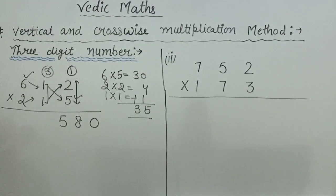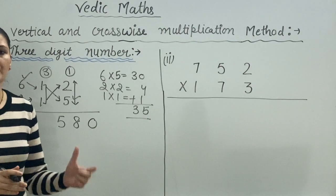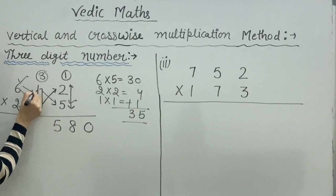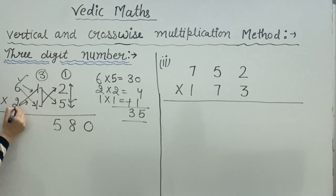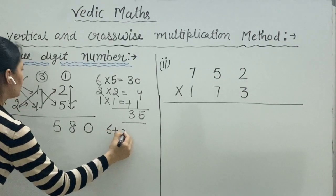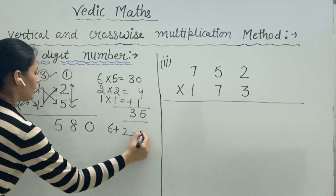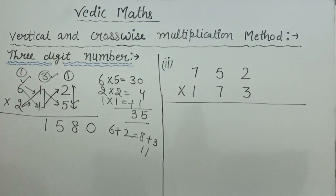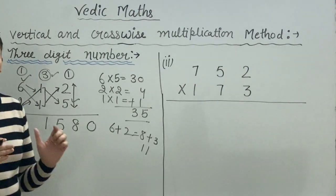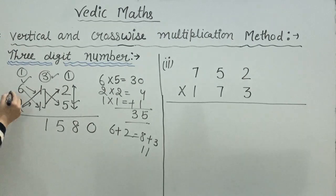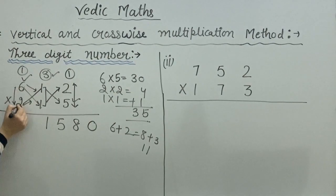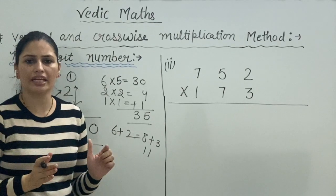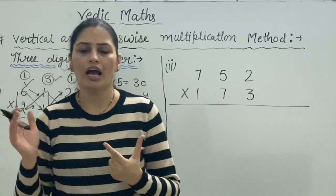Next, we do crosswise multiplication taking the last two digits: six ones are six, and two ones are two. Six plus two is eight, plus three carry is eleven. Put one here and one as a carry. Finally, vertically six twos are twelve, plus one carry is thirteen. So our answer is complete within a few seconds — three-digit number multiplied by three-digit number.